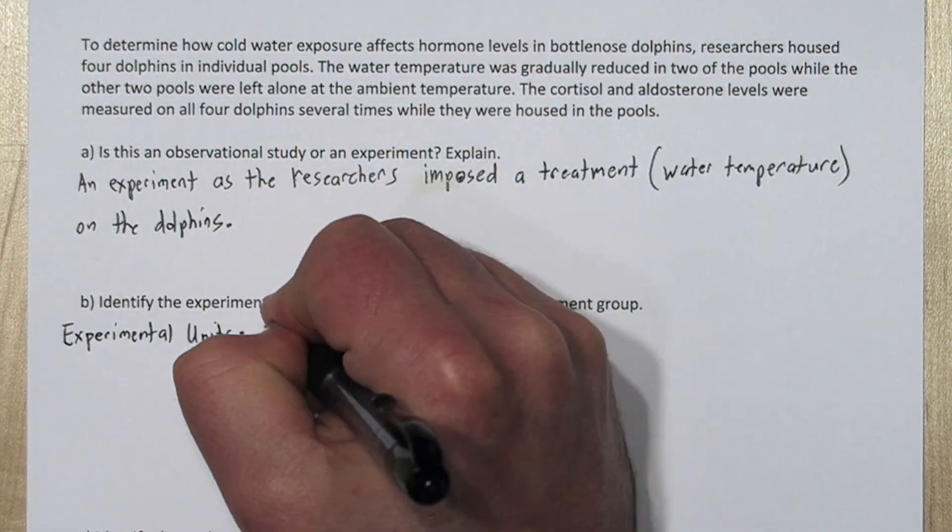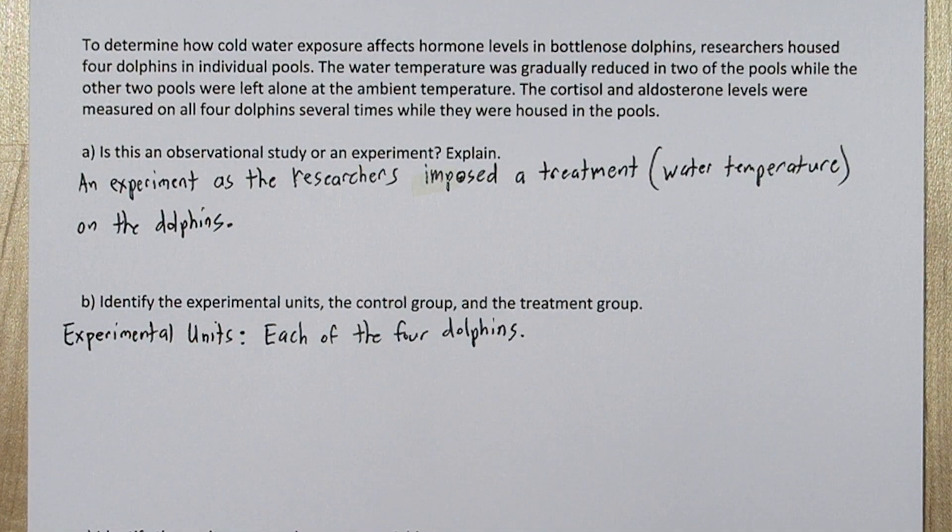The experimental units are each of the four dolphins, because they are the actual individuals that are having the treatment either applied or not. We can group these experimental units into a group that receives the treatment, called the treatment group, and a group that does not, called the control group.